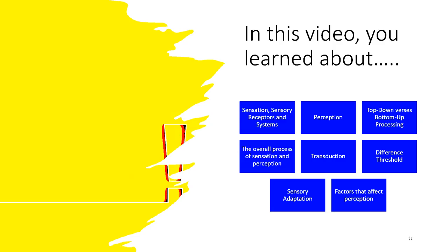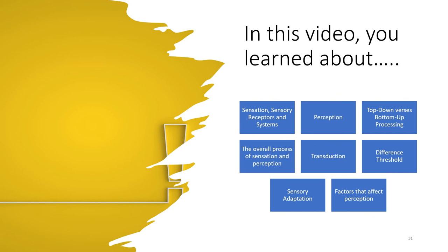In this video you've learned about sensation, sensory receptors, and systems. You've also learned about perception and top-down versus bottom-up processing, the overall process of sensation and perception, what transduction is, what a difference threshold is, sensory adaptation, and the factors that affect perception. As you review these concepts, think about how you would apply them to your own life. The more you can relate what you're learning to your own experiences, the more meaningful and memorable the learning will be.